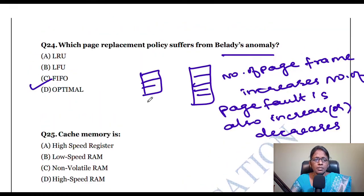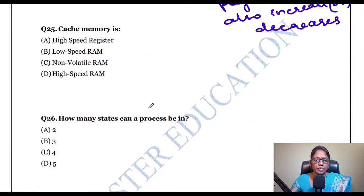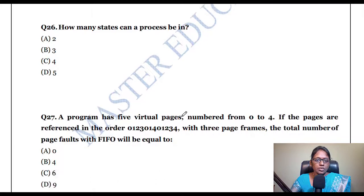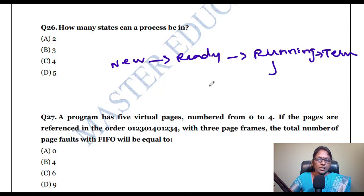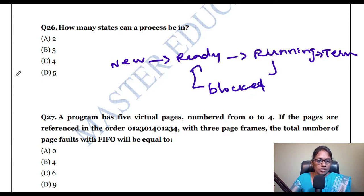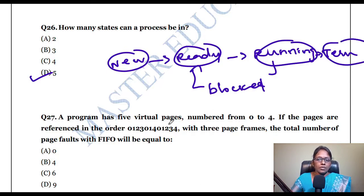Cache memory is a high-speed RAM. Next: how many states can a process be in? The states are: new, ready, running, blocked or waiting, and terminated — so there are five states.